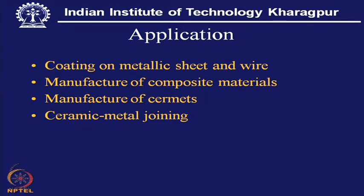The applications of the wetting process include surface coating on metallic sheets, which is commonly used for putting some resistance against corrosion. Another application is the manufacture of composite materials, where hard materials — that is, dispersions of hard material — are done in a metal matrix, and this metal should be able to form a fine coating or encapsulation over the composite material.